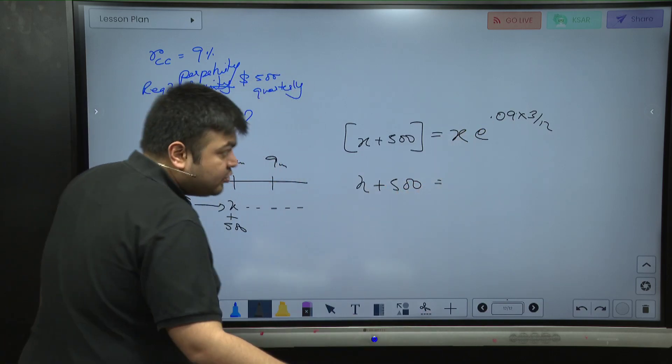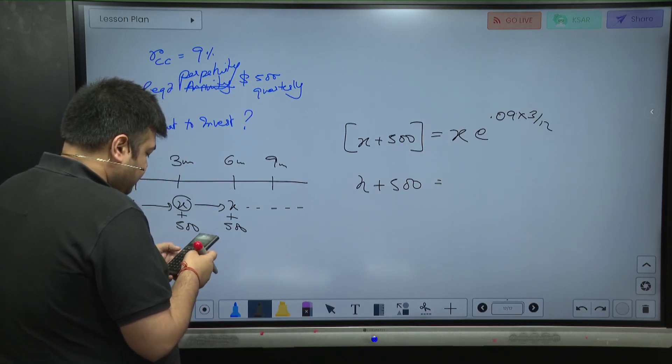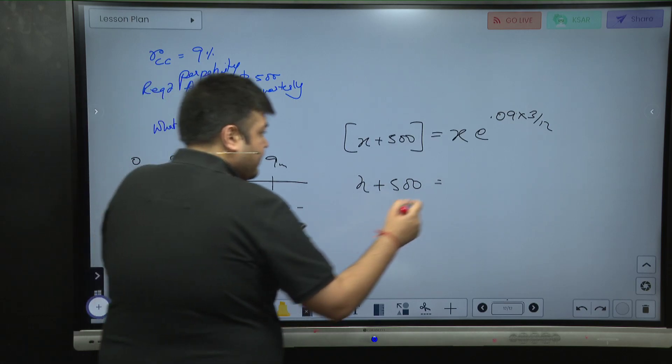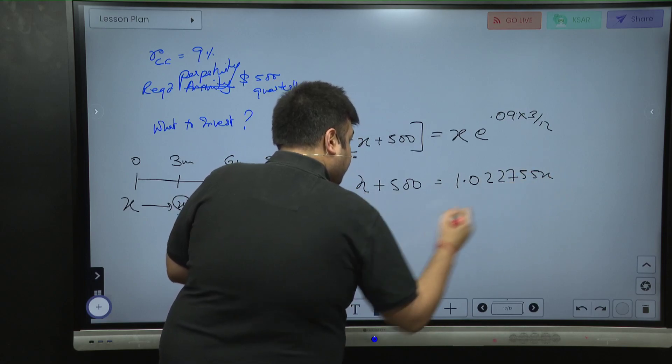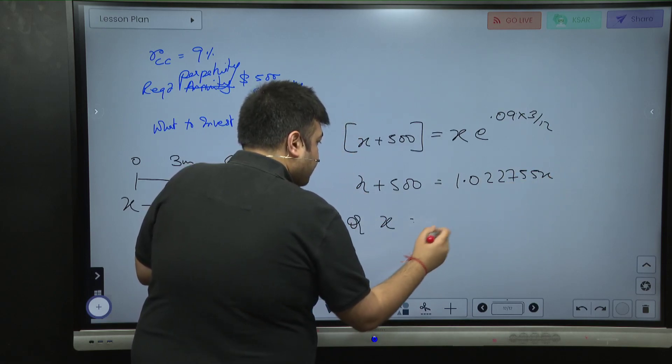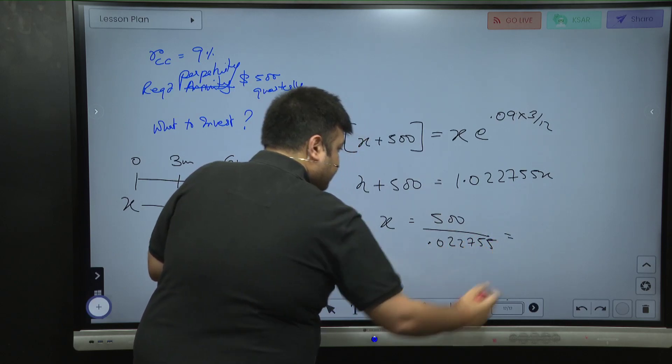This is 0.0225. Take ln of 0.0225, then take second ln. Correct.